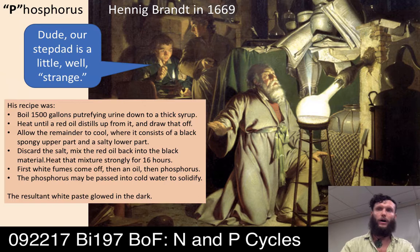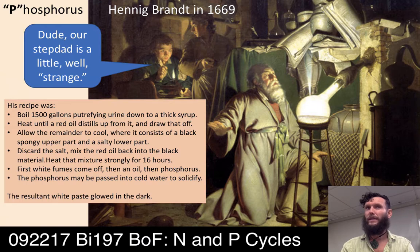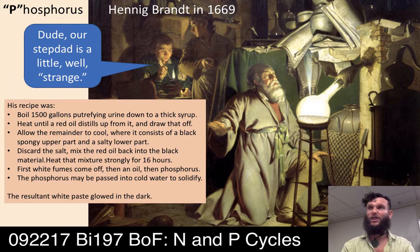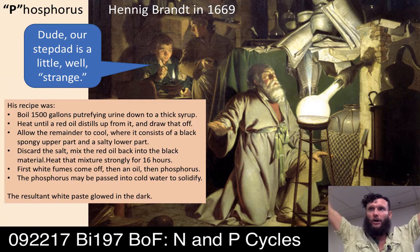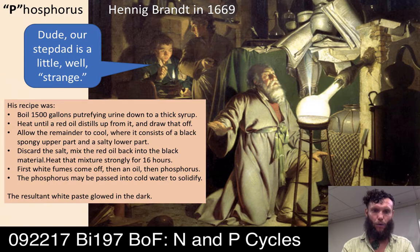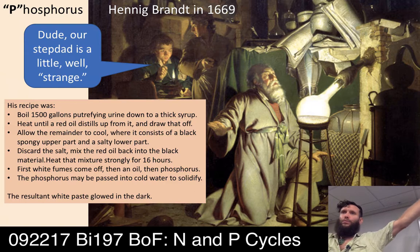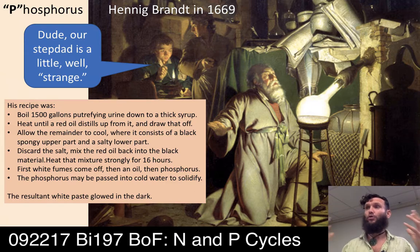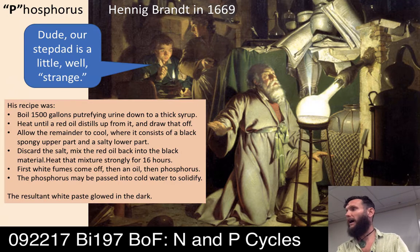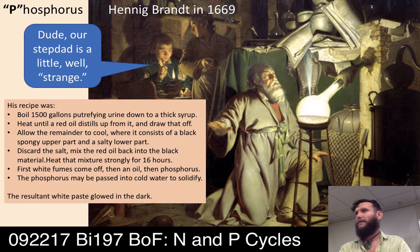His recipe: heat until a red oil distills up and draw it off; allow the remainder to cool into a black spongy upper part and a salty lower part; discard the salt — which turned out to be a mistake; mix the red oil (red phosphorus) back into the black carbon; heat strongly for 16 hours. First white fumes came up, then a white waxy oil that glowed in the dark.